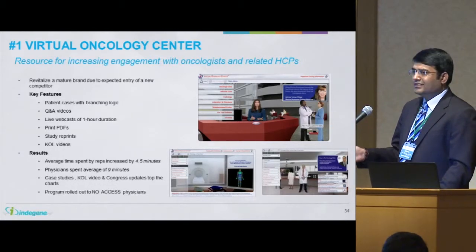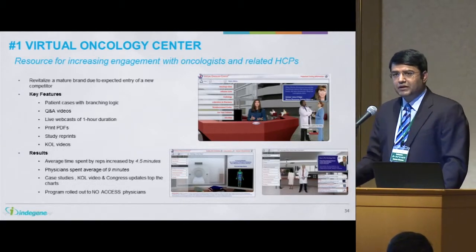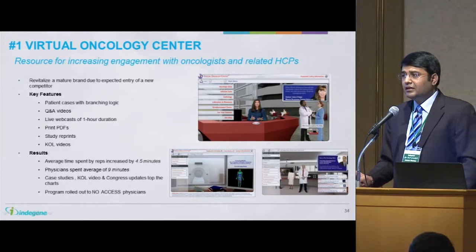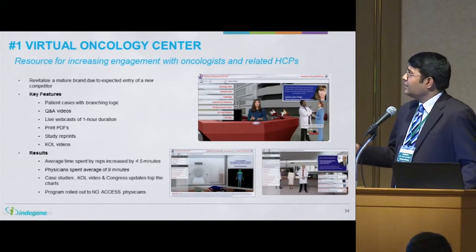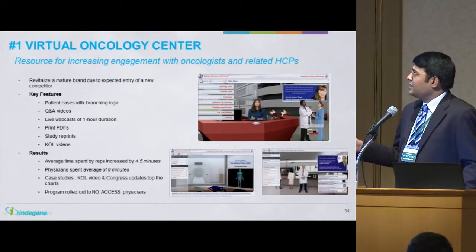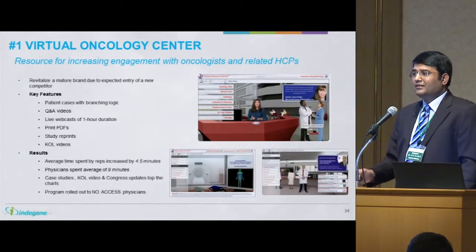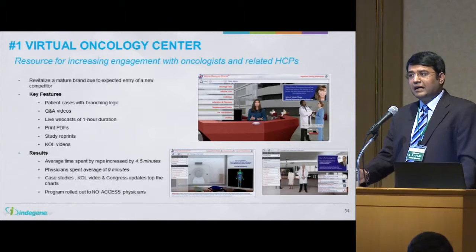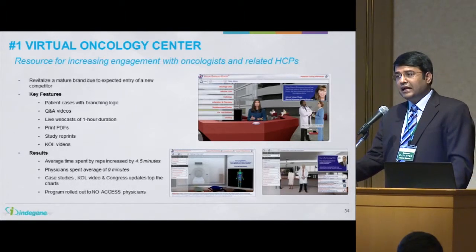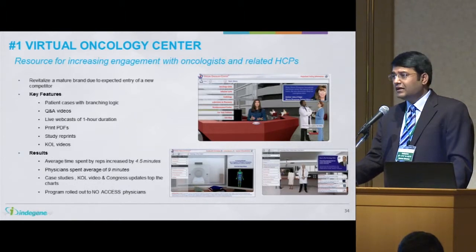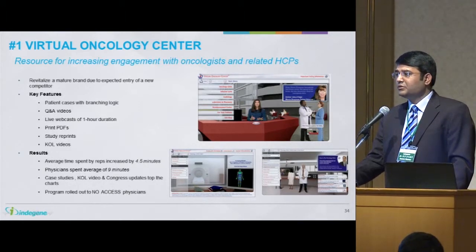Here is an example of a very successful program that was run by one of the top five pharma companies in the field of oncology. The product was in the field for management of breast cancer. The brief was very simple — they said we have this product, we need to differentiate in a highly competitive oncology market, and the incumbents were very, very well entrenched. So what is so different that this company could do? They came to us with this kind of brief.